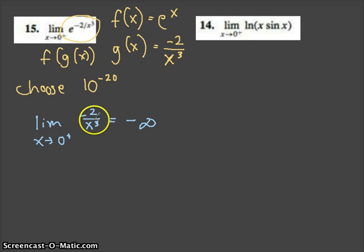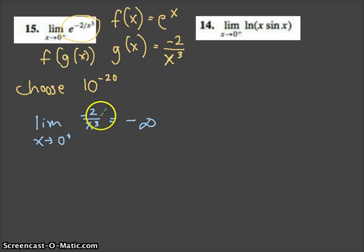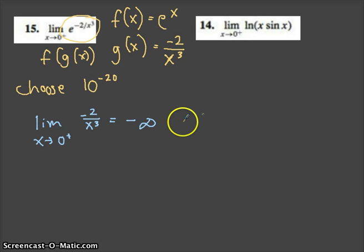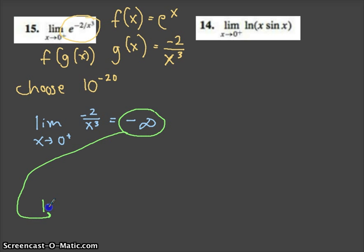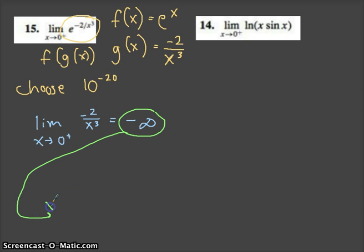So once again, x cubed is really, really small. Dividing by a really small number gives you a very large number. It's negative because of the negative 2. We're going to use this result for finding our limit of f(x).